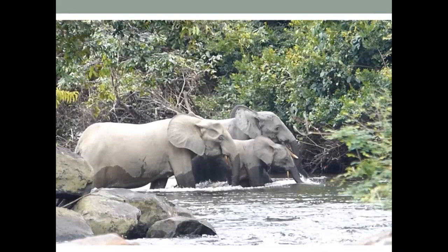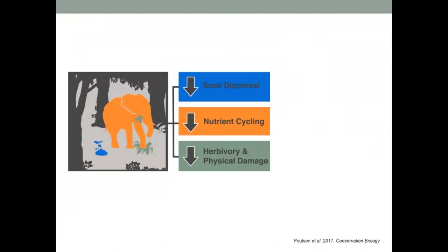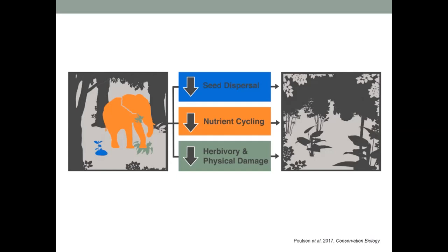When we think about elephants, we have a conceptual model of what they do in the forest. Their main contributions to forest ecology fall into three categories: seed dispersal, nutrient cycling, and herbivory and physical damage. All three decline with the loss of elephants, with significant effects on the forest environment. We'll lose dispersal of particularly large seeds, we'll lose a nutrient layer in the upper soil areas, and without elephants trampling and causing physical damage, we'll have a lot more understory growth — seedlings, saplings, and herbaceous vegetation. The forest will probably look quite different. But these are just predictions from a conceptual model, and we want to test them.